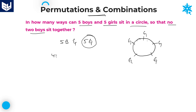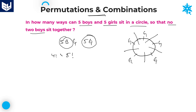If no two boys sit together, the boys must be placed between the girls only. If you observe carefully, between the five girls there are exactly five places. We need to arrange those five boys in those five places, so five boys can be arranged in five places in 5 factorial ways.